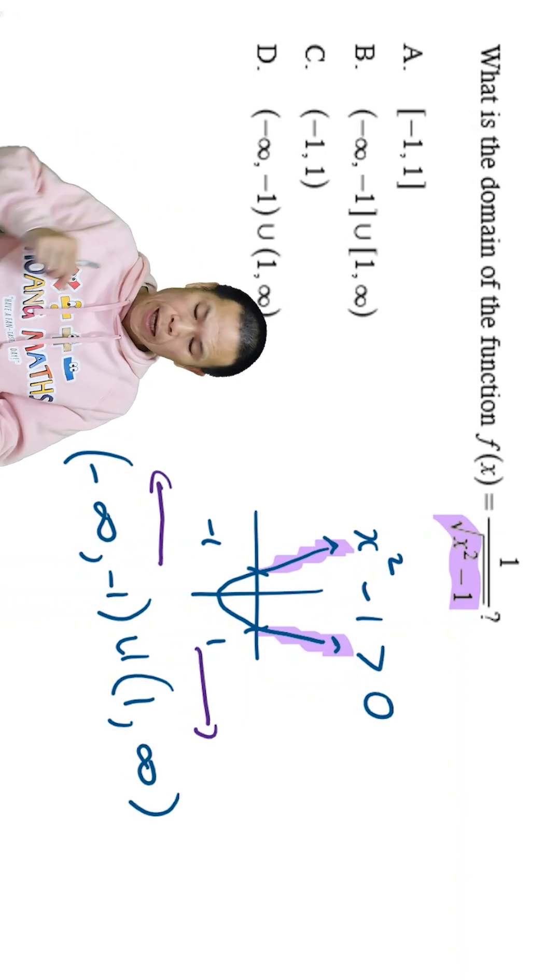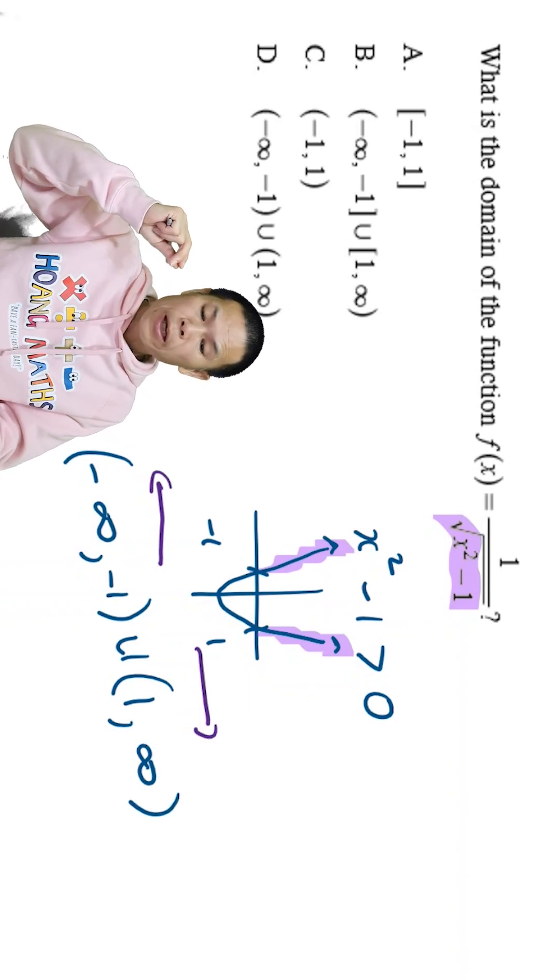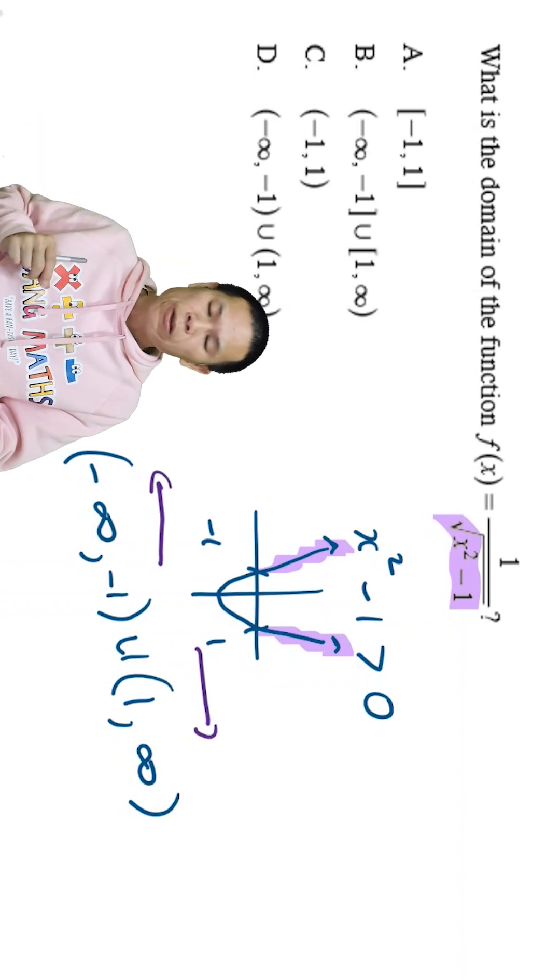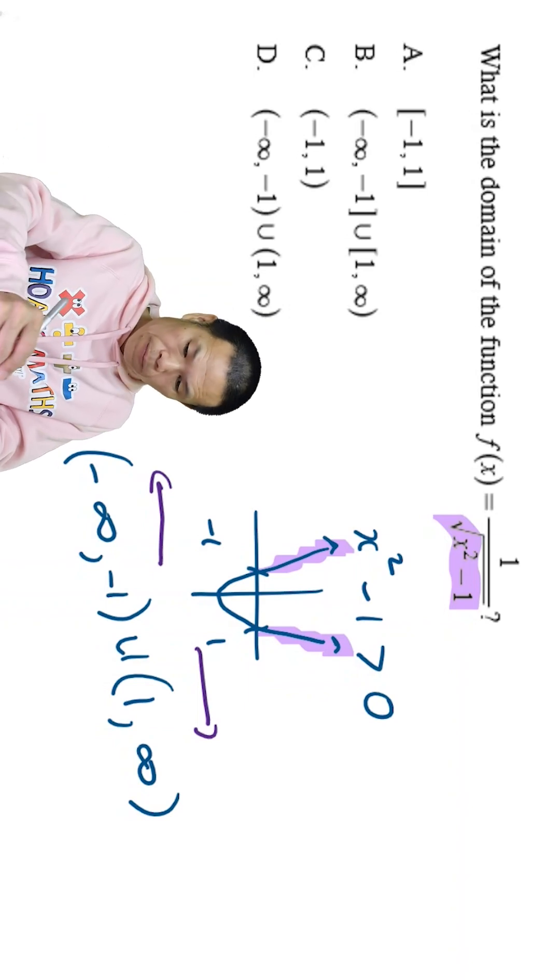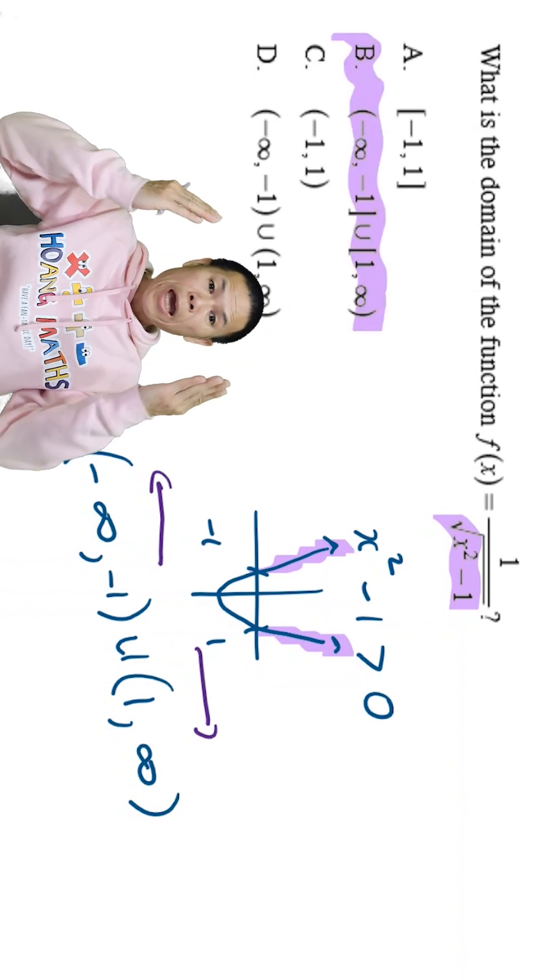Because you can't have 1. If you have 1, the denominator is 0, you cannot divide by 0. So the answer should be B. There you go.